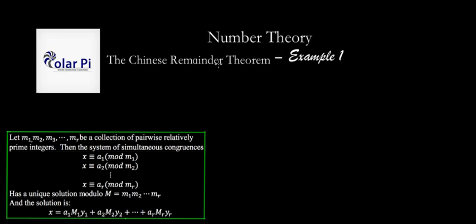Example one: the Chinese Remainder Theorem. You're here probably because you're studying number theory, discrete math, or contest math. Whatever the reason, I hope this video is helpful. The Chinese Remainder Theorem helps us solve a system of simultaneous congruences in two or more equations.